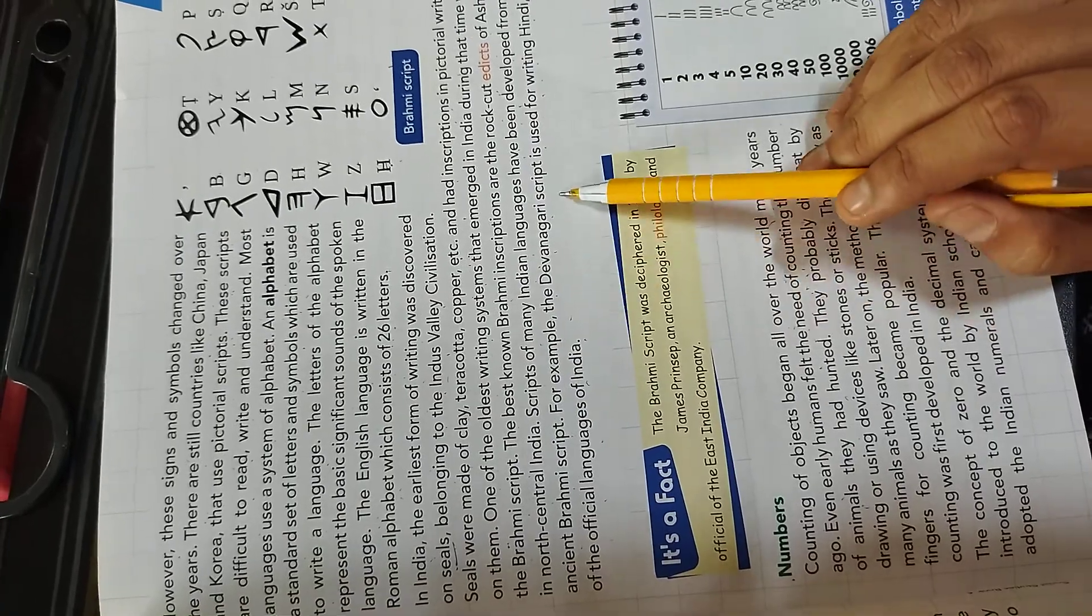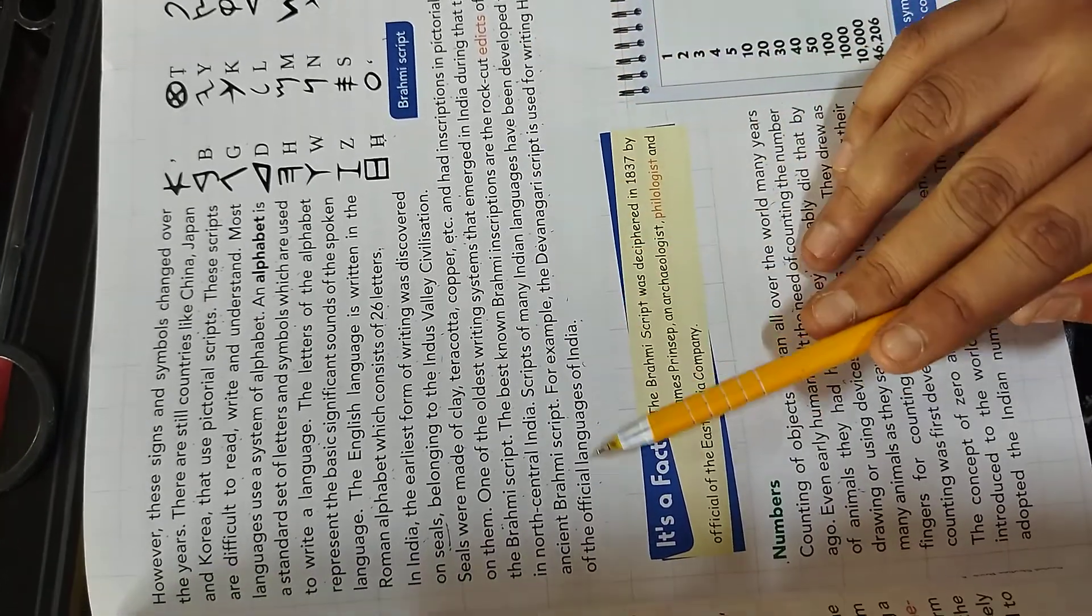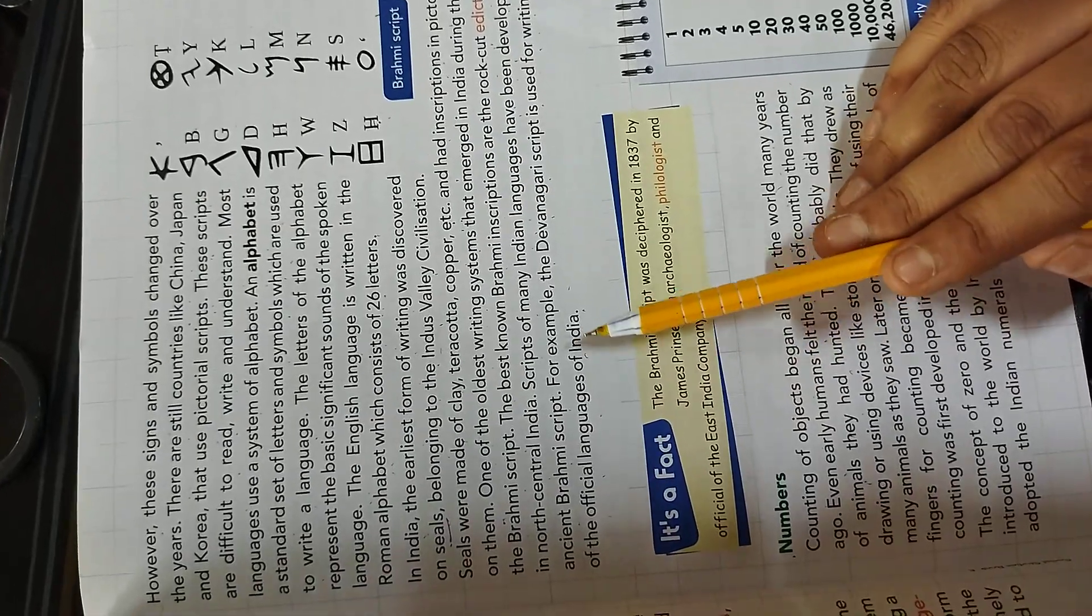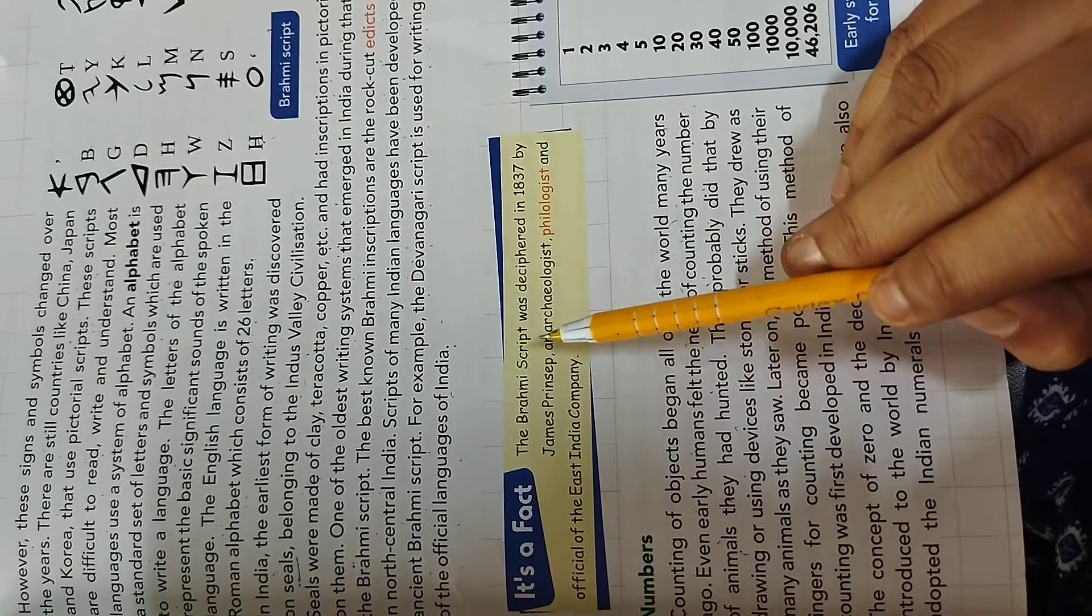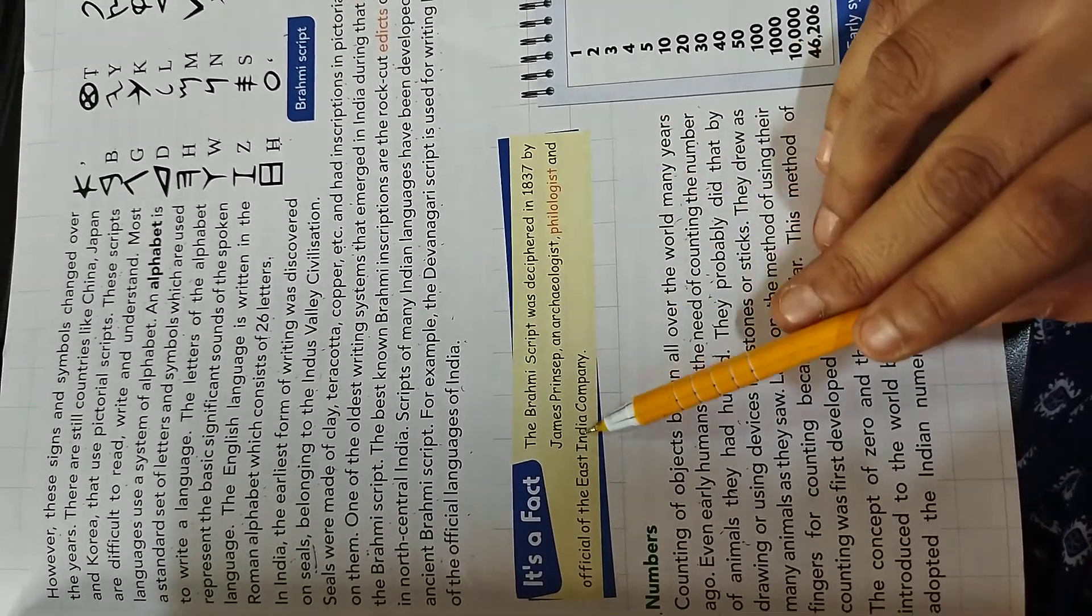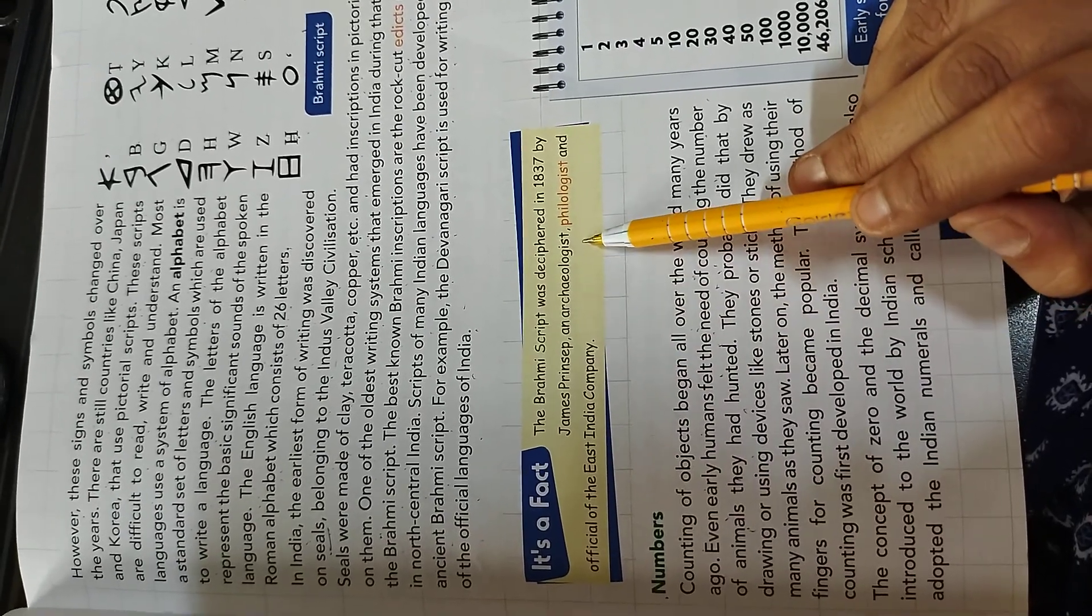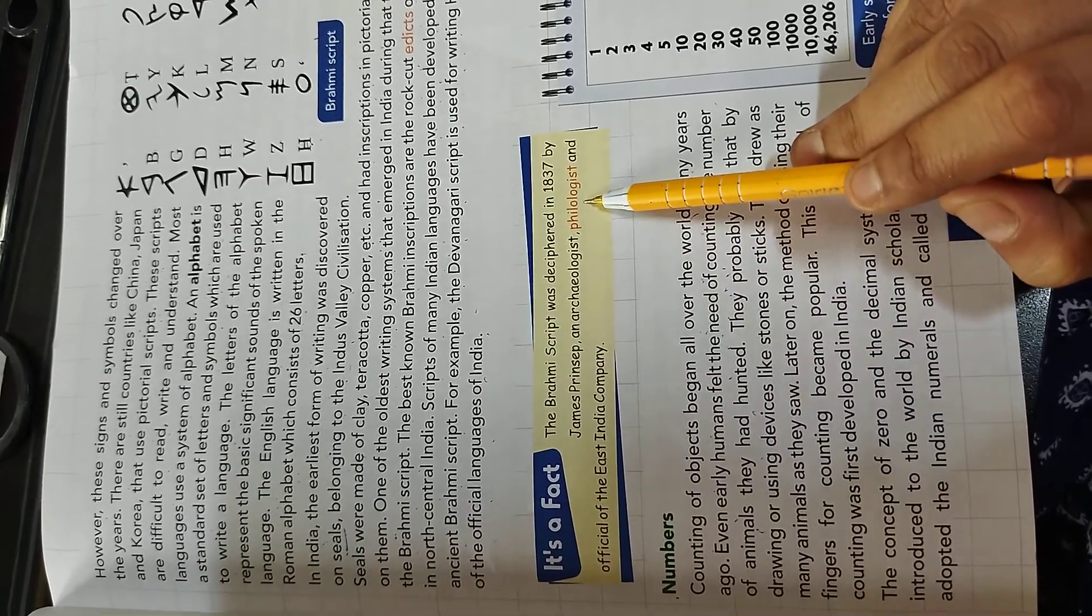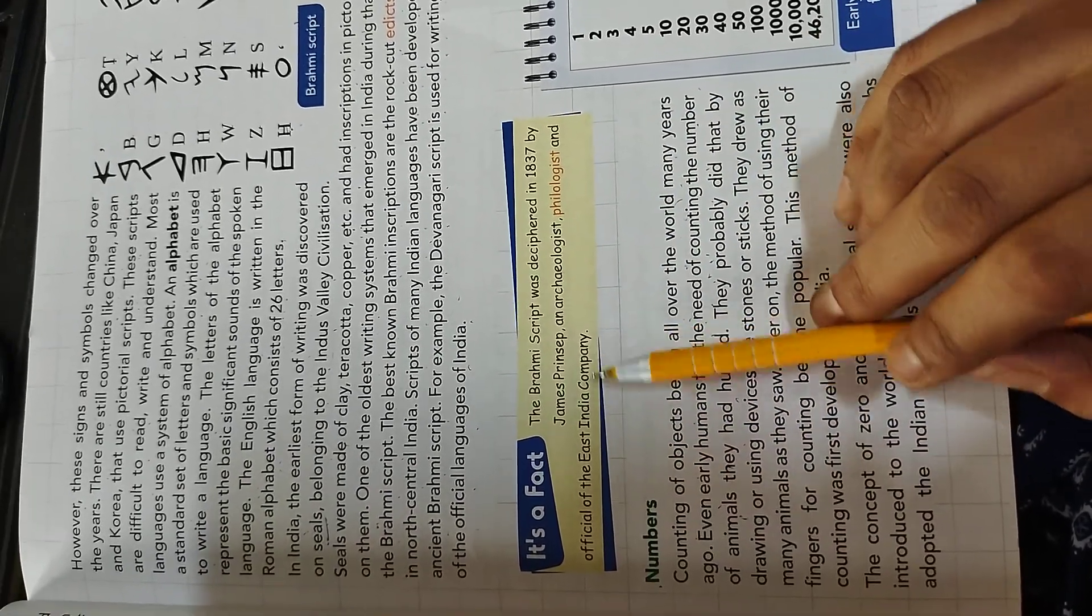The best known Brahmi inscriptions are the rock-cut edicts of Ashoka in north-central India. A script of many Indian languages have been developed from ancient Brahmi script. For example, the Devanagari script is used for writing Hindi, one of the official languages of India. This Brahmi script was deciphered in 1837 by James Princip, an archaeologist, philologist and official of the East India Company.